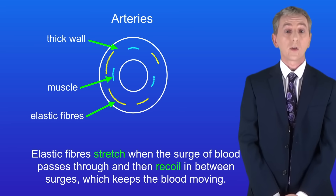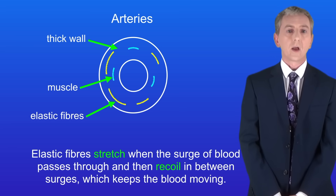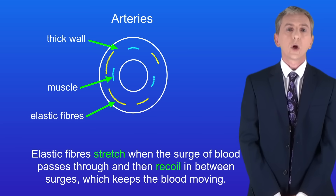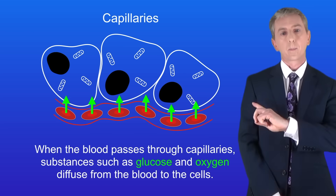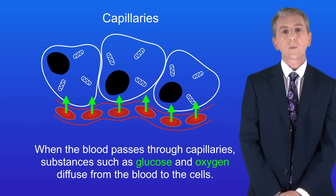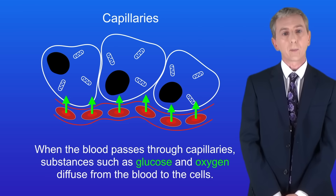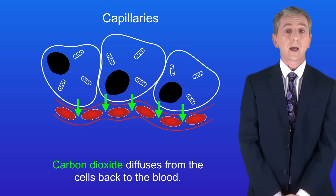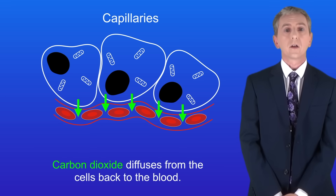Blood travels to the organs in arteries, but once it's in the organs the blood flows through capillaries. I'm showing you a picture of capillaries here. When the blood passes through capillaries, substances such as glucose and oxygen diffuse from the blood to the cells, and carbon dioxide diffuses from the cells back to the blood.